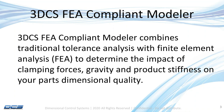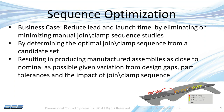For this version of AO, we have a new feature called sequence optimization — this is what we're going to spend most of this morning on. Our goal is to reduce lead and launch time by eliminating, or at least minimizing, the manual joint and clamp sequence studies that have to be done at the start of production.